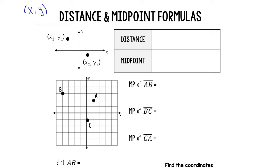Today we'll mostly be plugging and chugging into formulas. First, you're going to need the distance formula. The distance is D, and that equals a big square root. Underneath the square root, we have X2 minus X1 squared, plus Y2 minus Y1 squared.